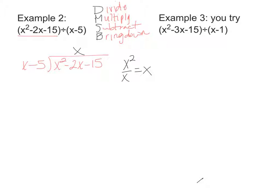Then we multiply X times X minus 5. X times X is X squared, and X times negative 5 is negative 5X. Then we subtract: X squared minus X squared is 0, and negative 2X minus negative 5X — minus negative becomes plus positive — so negative 2X plus 5X is 3X. Then we bring down our negative 15.